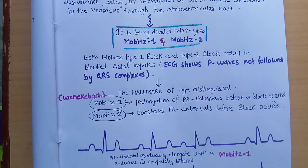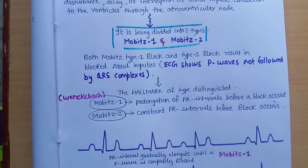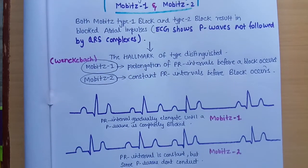But as soon as Mobitz type 1 is converted to Mobitz type 2, we will not see prolongation of the PR interval. In Mobitz type 2, the PR interval is constant, but suddenly the QRS complex disappears — we cannot see any elongation of PR interval. This is the characteristic distinguishing finding on the ECG: in Mobitz type 1 we see prolongation of PR interval, whereas in Mobitz type 2 we do not.